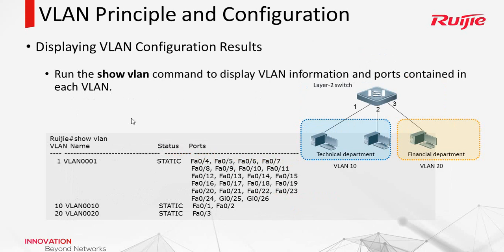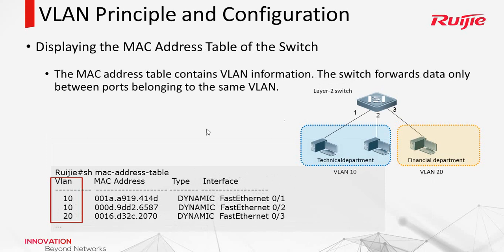After configuring the VLANs, we can use 'show vlan' to check the configuration. We can see that VLAN 10 has two interfaces F1 and F2, VLAN 20 has one interface F3, and all other interfaces belong to VLAN 1. When the switch receives a packet, it checks the MAC address table, which now also includes an associated VLAN. In this project we also have a Layer 3 switch — how to configure that will be covered in the next course.